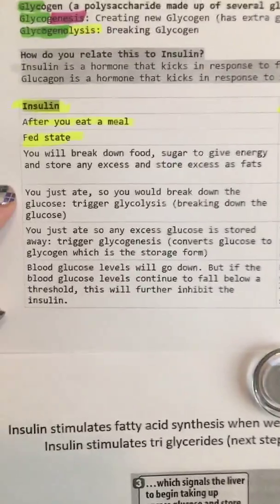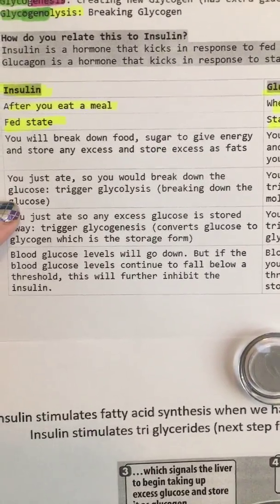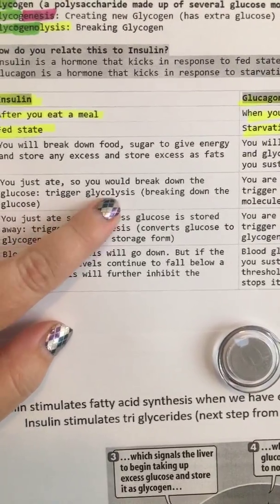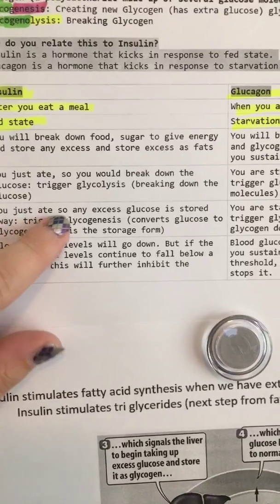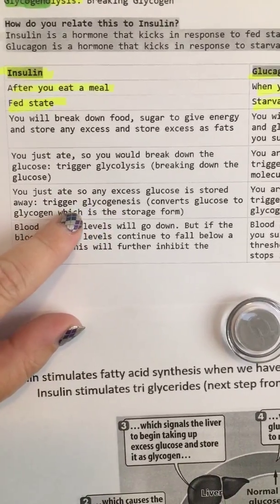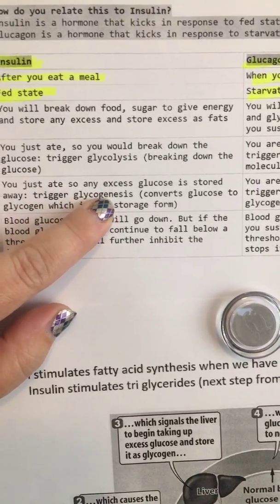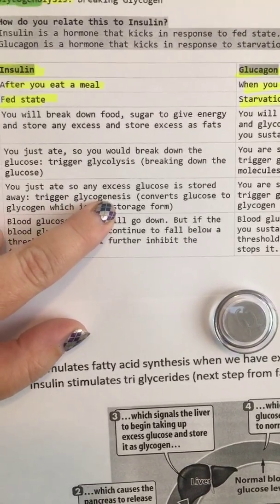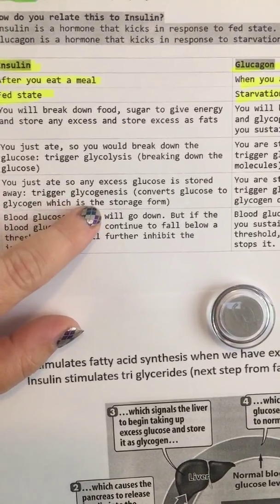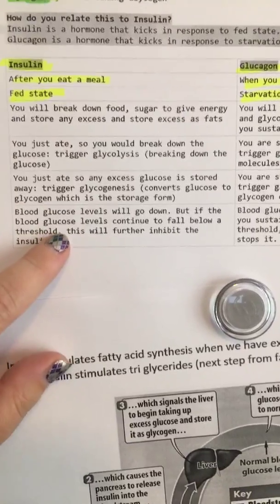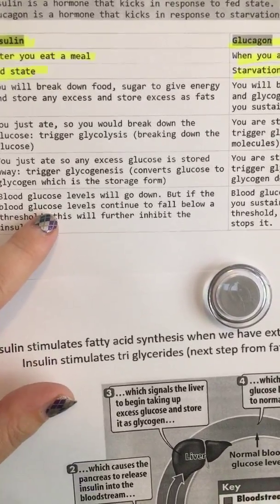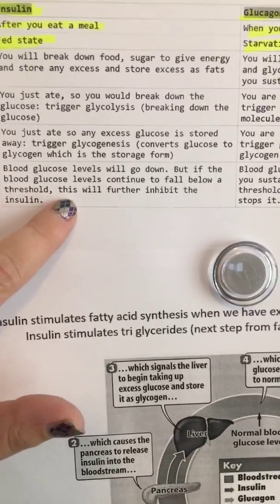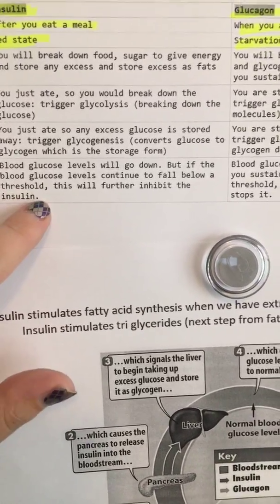With insulin, you just ate, so you're going to break down the glucose, which is triggering glycolysis. You just ate, so the excess glucose is stored away — it's going to trigger glycogenesis. Glyco with a Y is how we're storing it, and genesis is to create, so we're creating new storage of glycogen. Then blood glucose levels will go down further. But if blood glucose levels continue to fall below threshold, this will further inhibit the insulin.